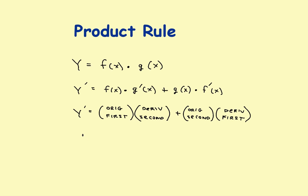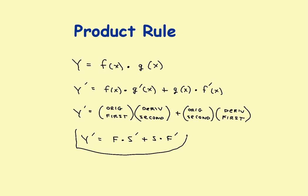Occasionally I'll shorten it down to just this: y prime equals the first times the derivative of the second, plus the second times the derivative of the first. This is the way I usually remember it — first times the derivative of the second, second times the derivative of the first.